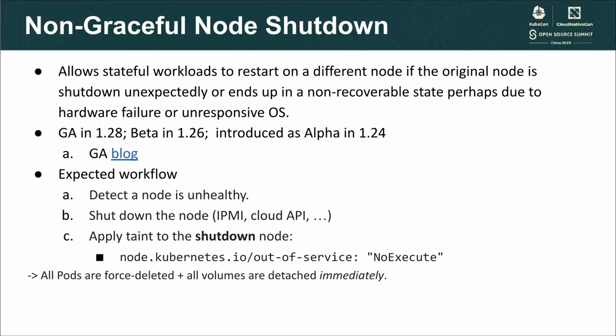The non-graceful node shutdown feature allows stateful workloads to move to another running node if the original node is shut down unexpectedly or ends up in a non-recoverable state. To use this feature, you need to apply the out-of-service taint on the node that is shut down. After that, the pod-gc-controller will forcefully delete the pods and the attach-detach-controller will forcefully detach the volume and allow volume attachment objects to be deleted.